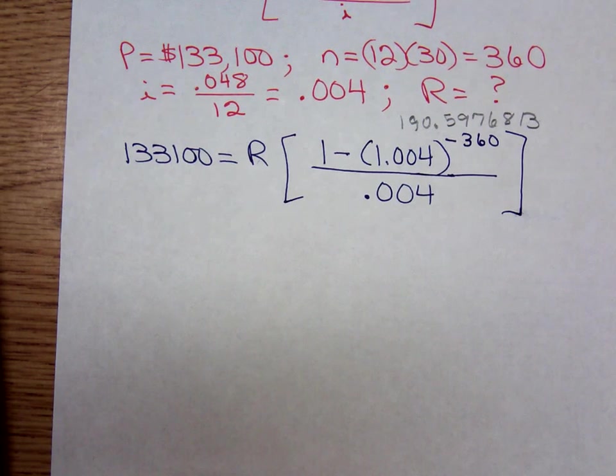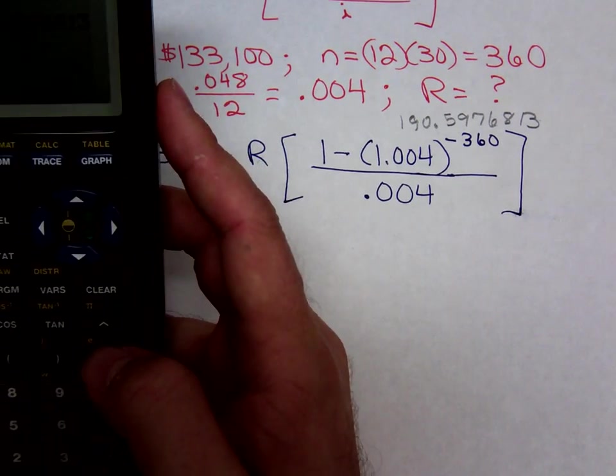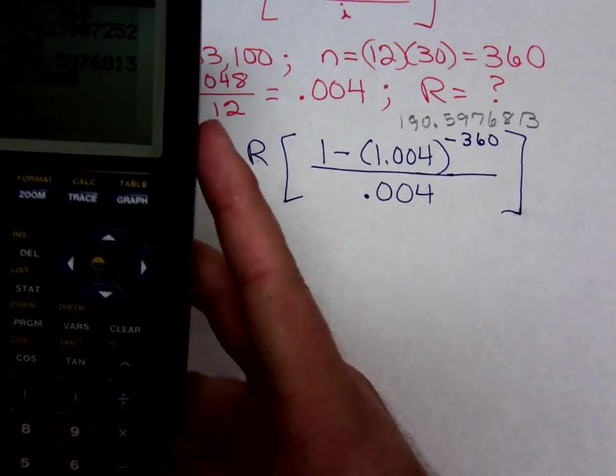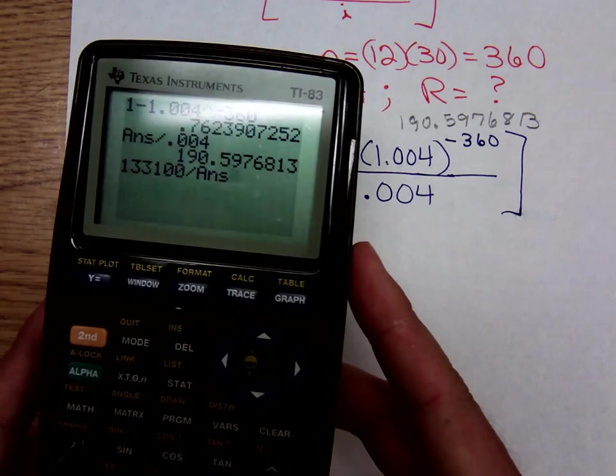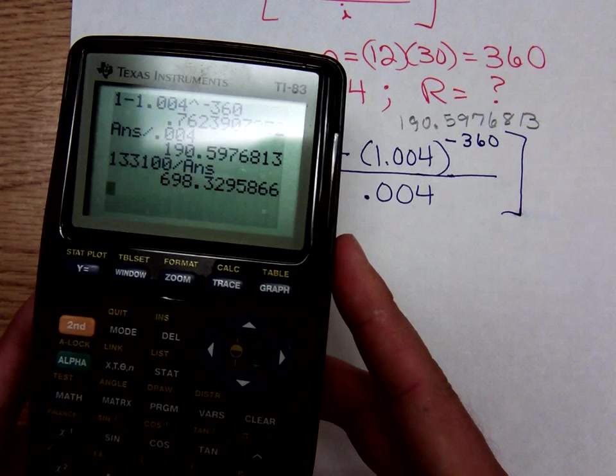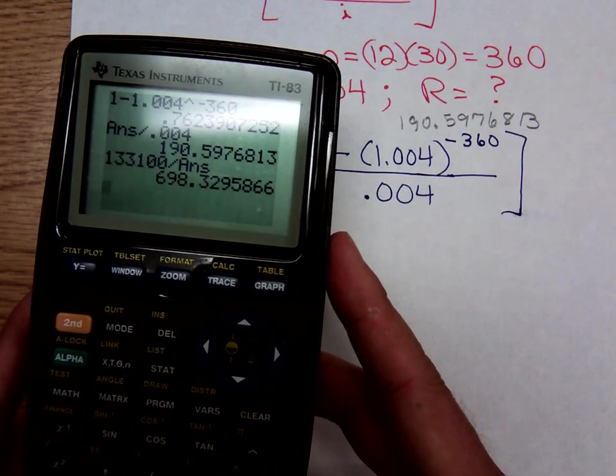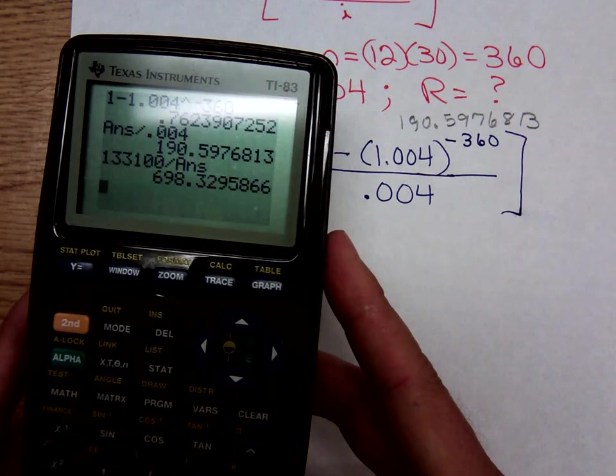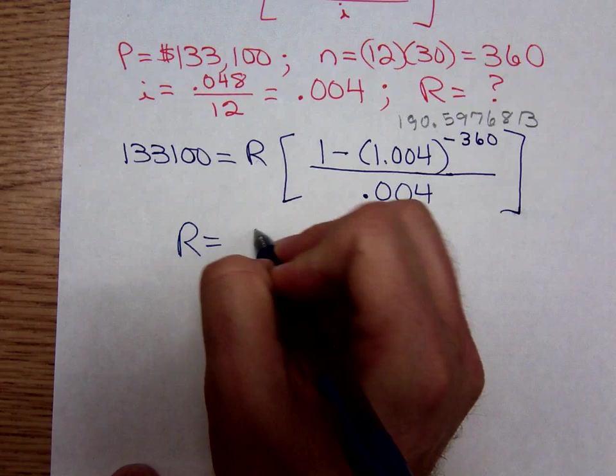So we go $133,100 divided by our previous answer. It looks to me that their 30-year mortgage payment will be $698.33. This is called the principal and interest payment.